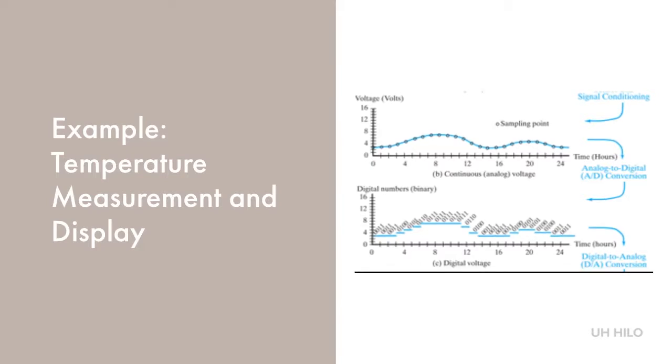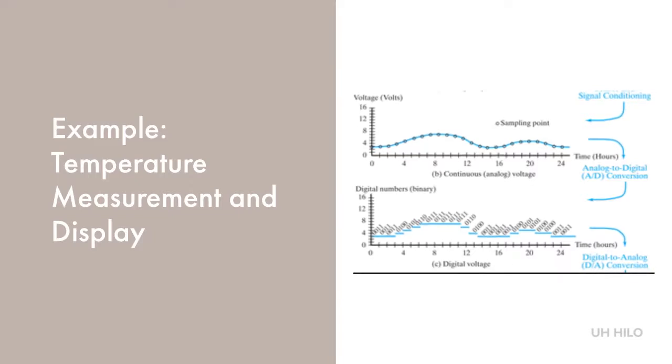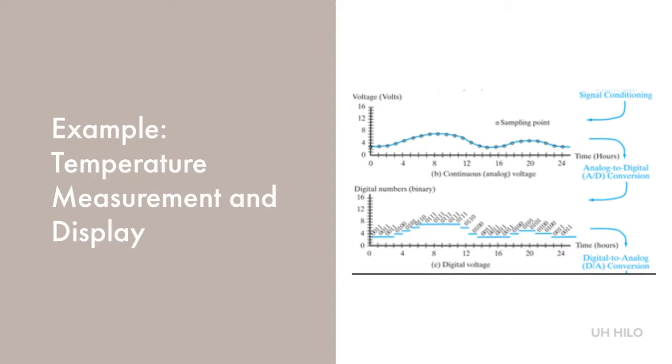We sampled the temperature once per hour and used an analog to digital converter to replace the measured value with digital numbers in binary. Here we have just four bits, so we've lost a great amount of precision and can only have 16 different temperatures.